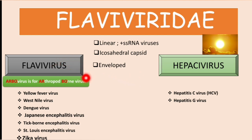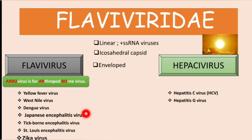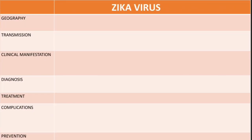The Zika virus belongs to the Flavivirus genus and it is an arbovirus. We have already covered the yellow fever virus, the West Nile virus, the dengue virus, and the Japanese encephalitis virus. We are going to skip the tick-borne encephalitis virus and Saint Louis virus for now and cover those later.